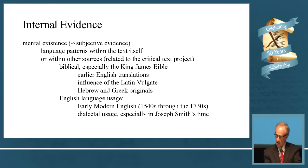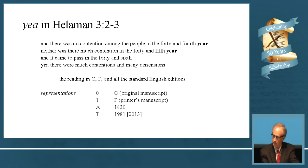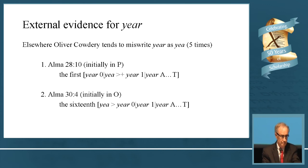The example I'm going to talk about is year in Helaman 3:2-3. And there was no contention among the people in the forty-fourth year. Neither was there much contention in the forty-fifth year. And it came to pass in the forty-sixth, yea, there were much contentions and many dissensions. This is the way the current text reads. The original manuscript, printer's manuscript, all the printed editions read this way. There's external evidence though that this reading should be year, not yea.